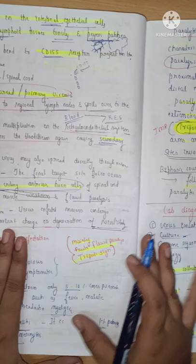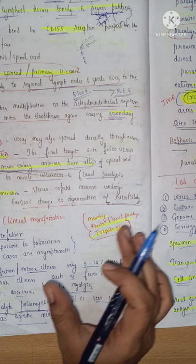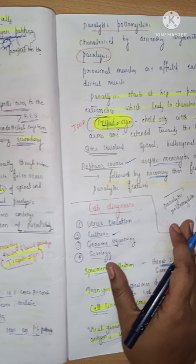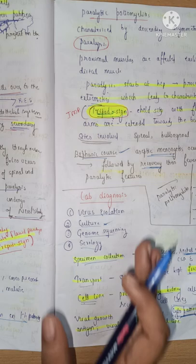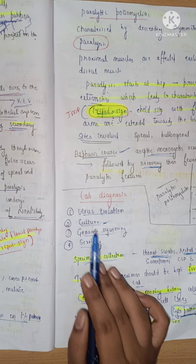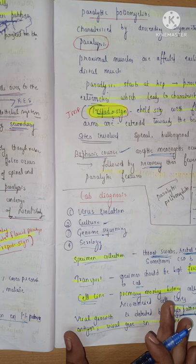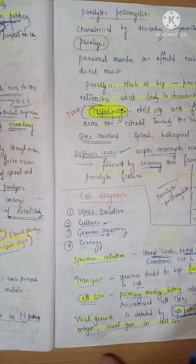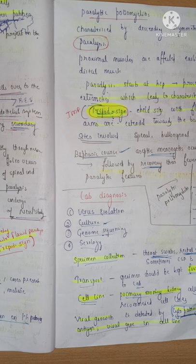The main points to remember from clinical manifestation and lab diagnosis: acute flaccid paralysis and the tripod sign are very important for practical exams — given a case history with these signs, you can identify it as a case of polio. For lab diagnosis, remember the headings: virus isolation, culture, serology, and genome sequencing via PCR. The key MCQ point is that primary monkey kidney cells is the cell line used for virus culture. Thank you for watching; please subscribe to our channel.